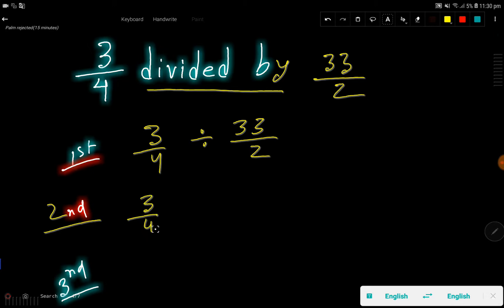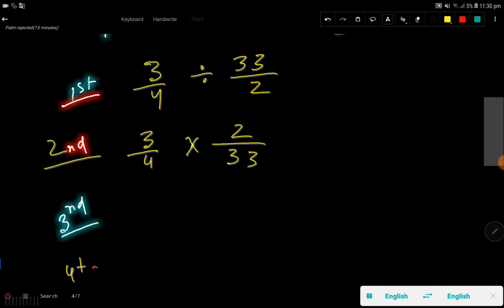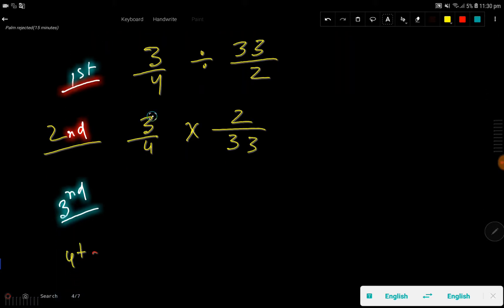In the second step, I will change this division sign to a multiplication sign, then I will take the reciprocal of this fraction, that is 2 over 33.